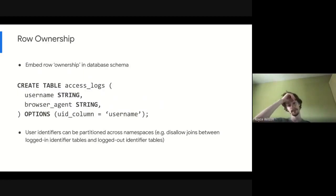Looking closer at row ownership, we embed it as part of table schema or metadata. So in this case, our access logs, maybe there's a logged in user name that we log in addition to the browser agent. And that's what we can use to define who a user is.